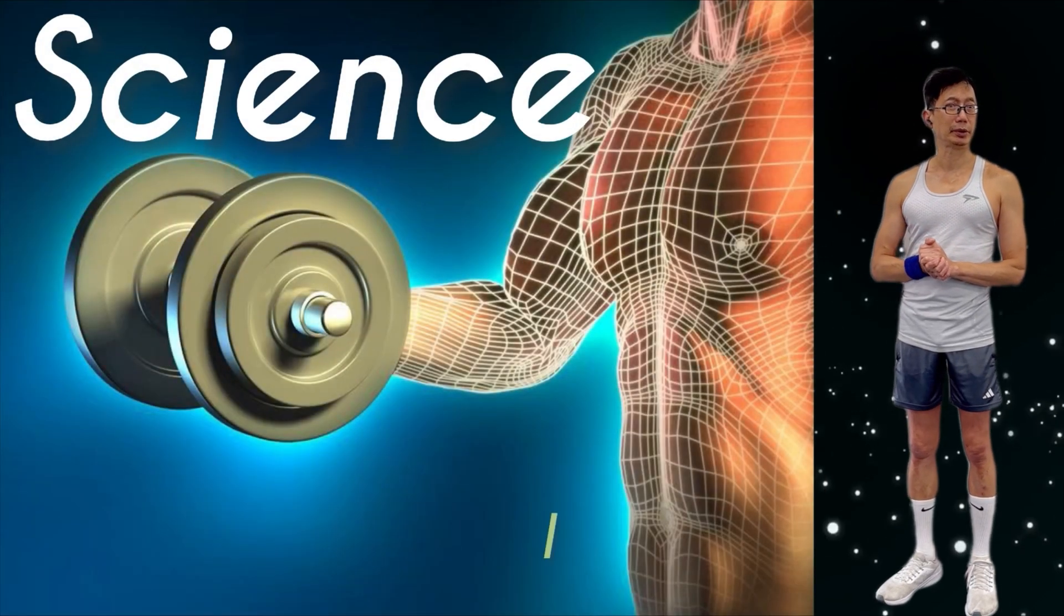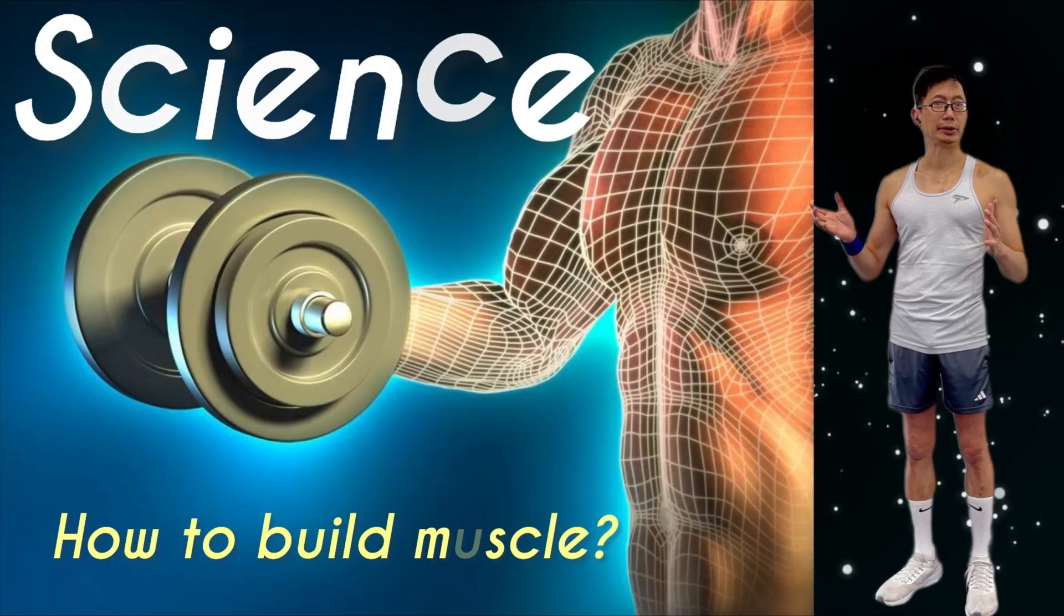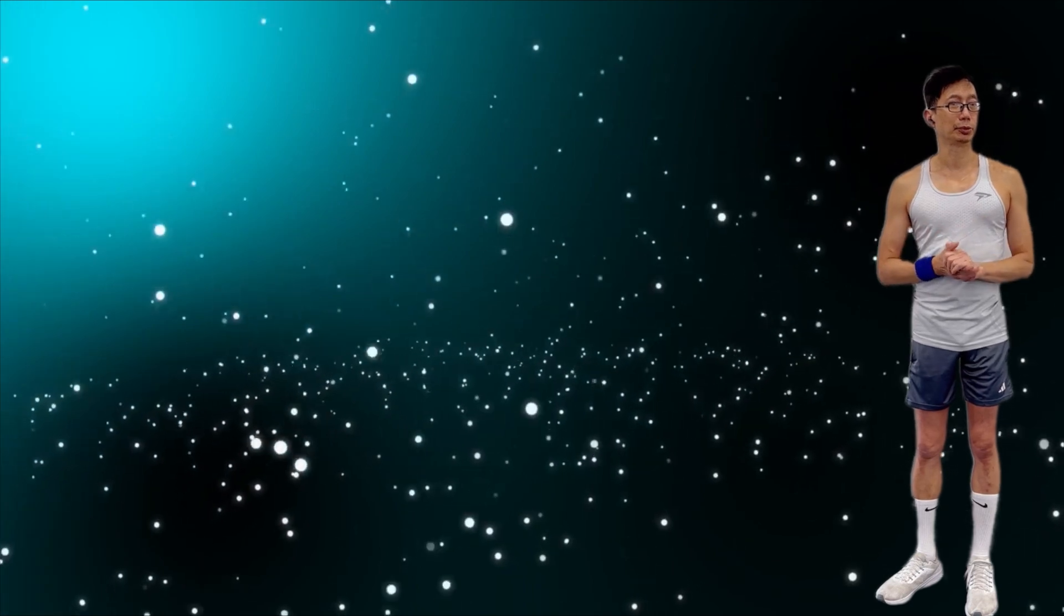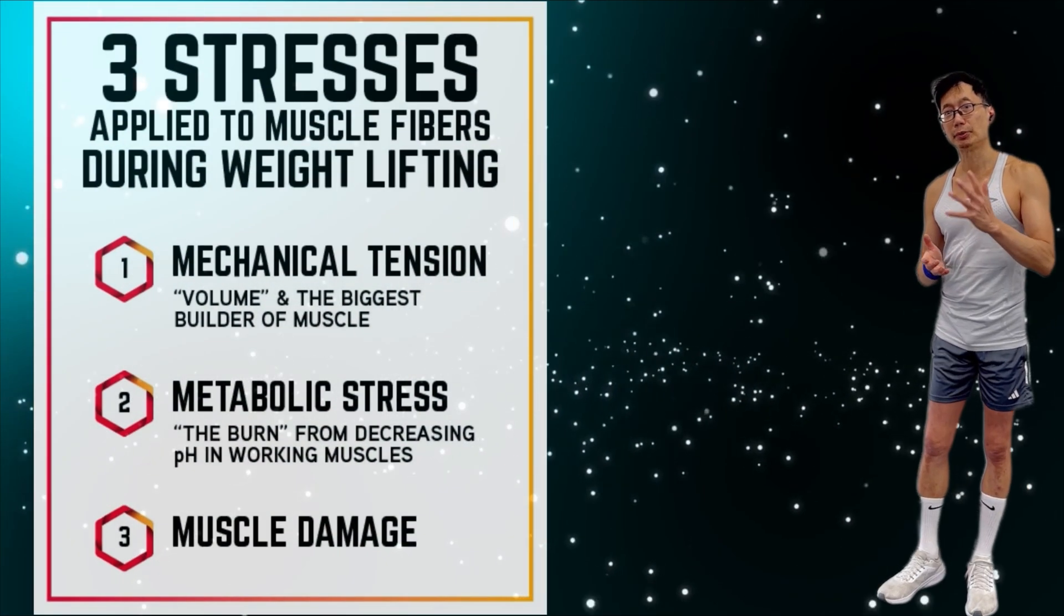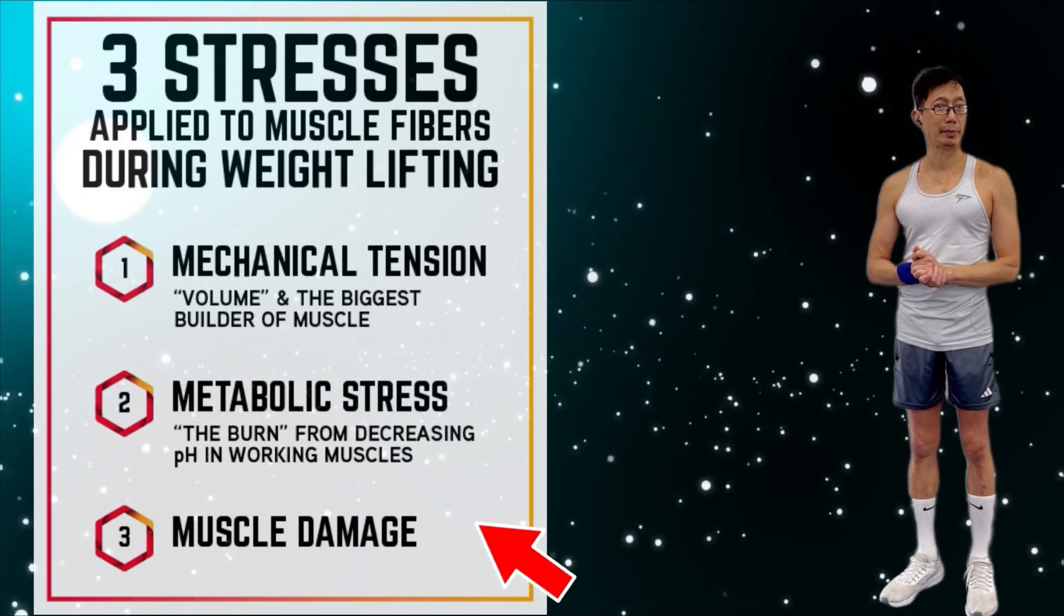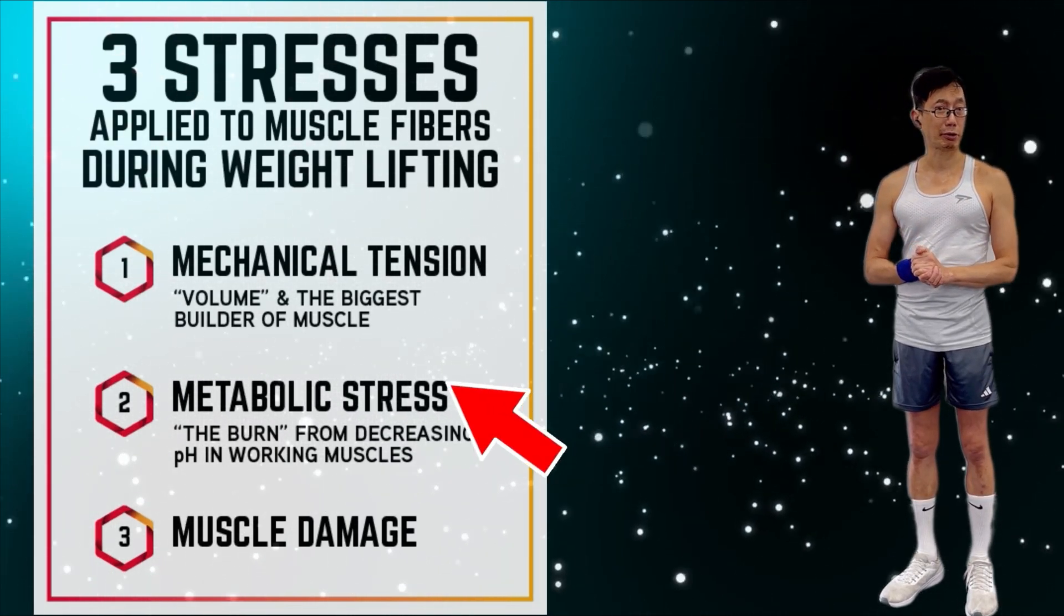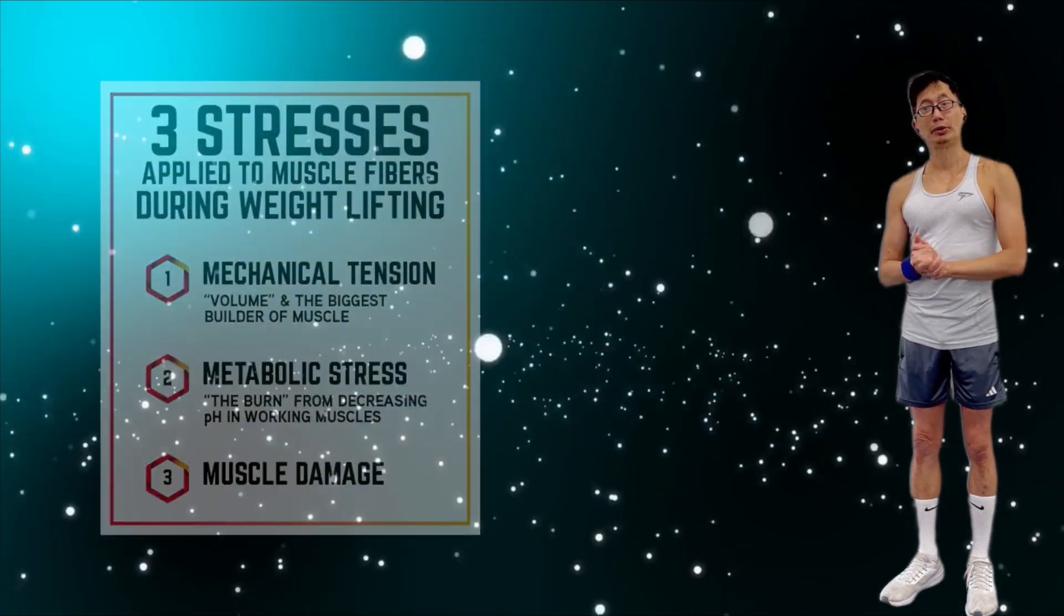And in order to build muscles effectively, we need to understand the science behind it. When you are trying to build muscle, there are three important scientific concepts to keep in mind. First, mechanical tension. Second, muscle damage. And third, metabolic stress. Let's take a look at each one individually.